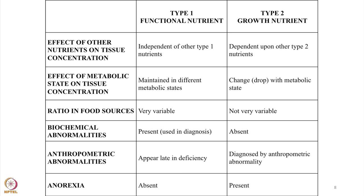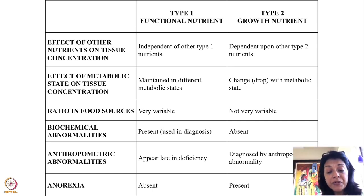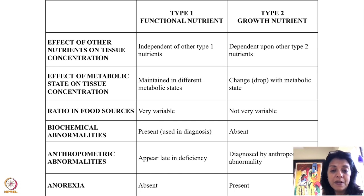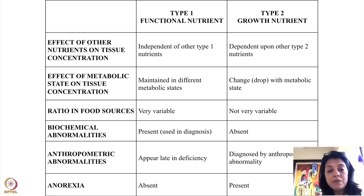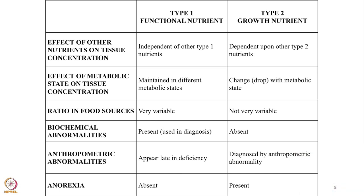The signs of type 2 deficiency: the three things we check for growth are weight, length/height, and MUAC — mid-upper arm circumference. If any of these are affected, it's type 2 nutrient deficiency. In your program, do focus on type 2 nutrient-dense food, mainly complementary food, and pregnant and lactating mothers' diets. For non-vegetarian children, start with meat, fish, bone broth, or eggs — egg is the best food to start with. Many European countries recommend non-vegetarian diet as first foods.